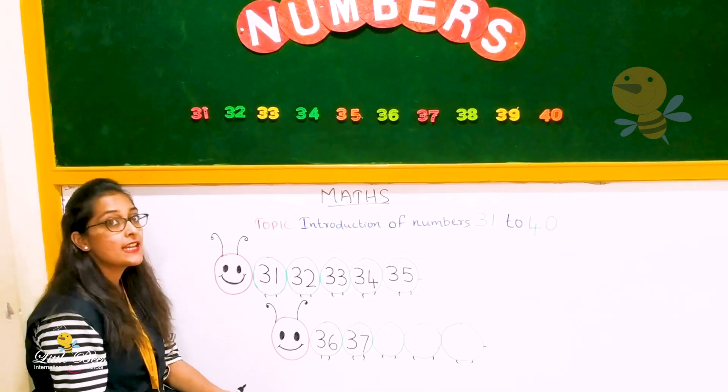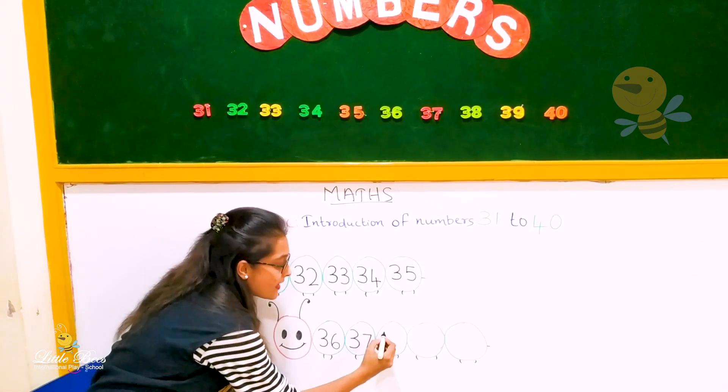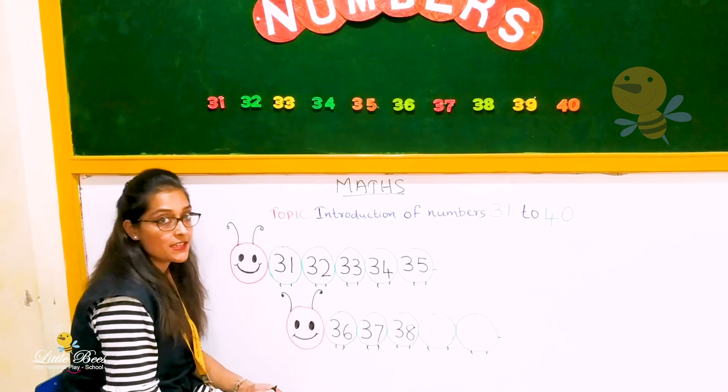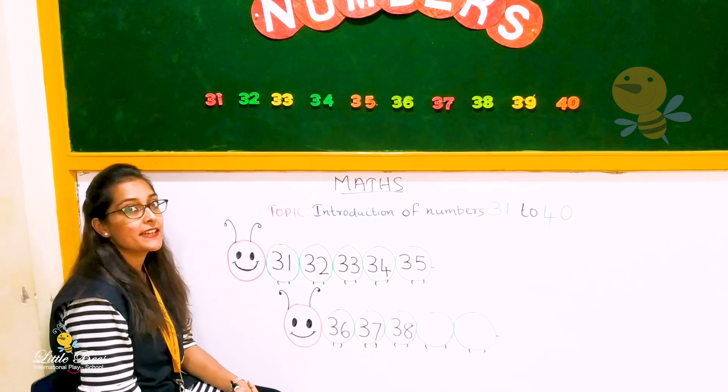And next number is 3, 8, 38. 3, 8, 38. Next number is 3, 9, 39.